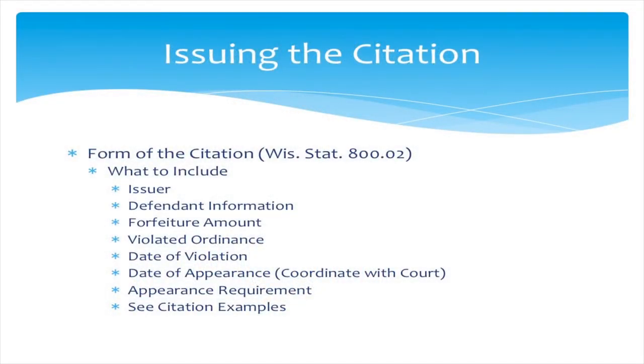On the citation, you must list the violated ordinance, the date of violation — which can be a time frame. If they're in violation each day they don't clean it up, you can list the entire period, say two weeks, and the forfeiture could be $100 a day totaling $1,000, plus court costs. You also need to note the appearance date and requirement. If someone doesn't appear and doesn't send a not-guilty plea by mail, the circuit court judge can find them guilty in default.